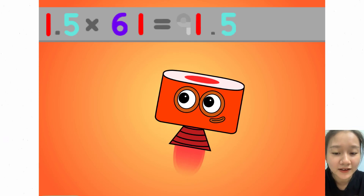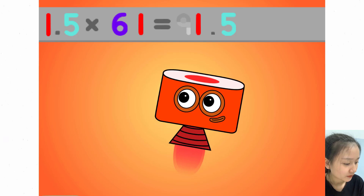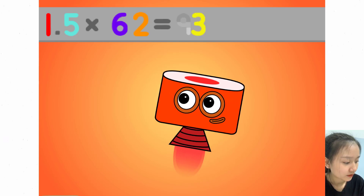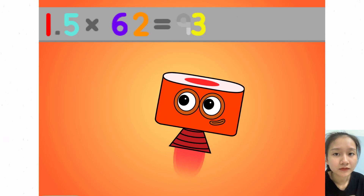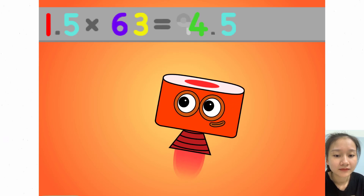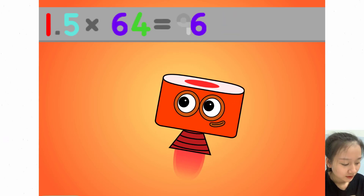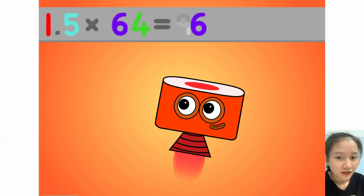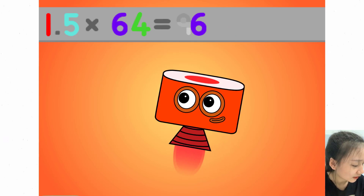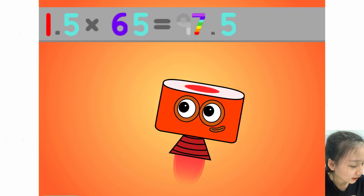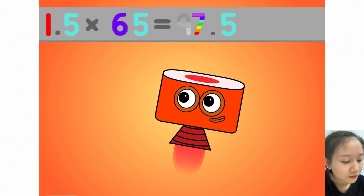1.5 times 61 equals 91.5. 1.5 times 62 equals 93. 1.5 times 63 equals 94.5. 1.5 times 64 equals 96. 1.5 times 65 equals 97.5.